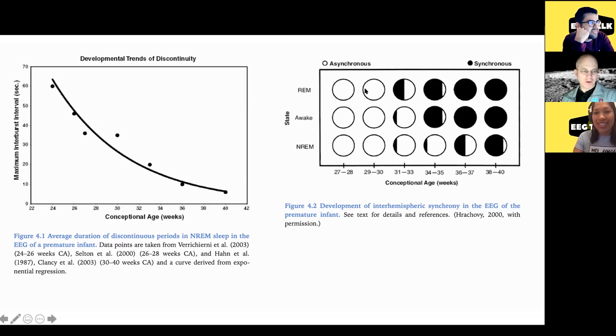Another point is that how asynchronous those bursts are also depend on gestational age. So on the right in this figure 4.2, we see that in non-REM sleep, like what we're looking at, essentially before 30 weeks, it's completely asynchronous. And as the baby ages, you get a little more synchrony as time goes on.